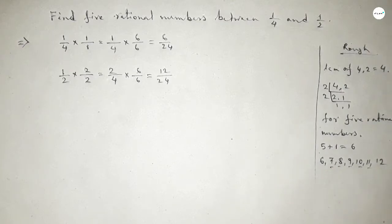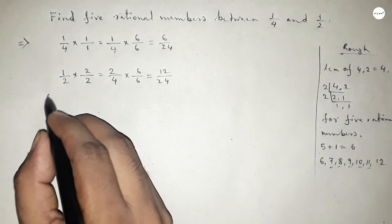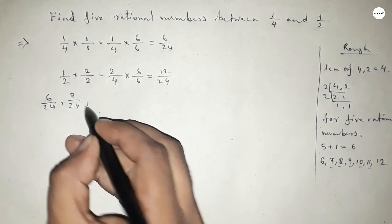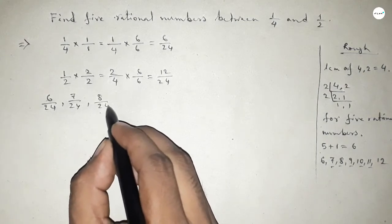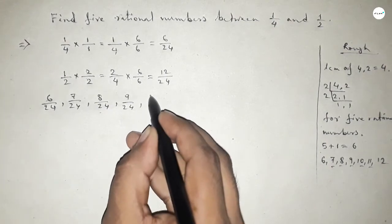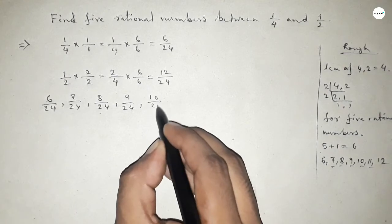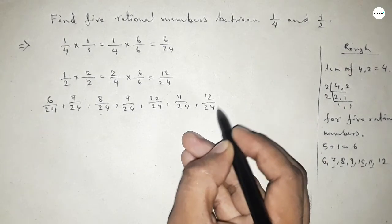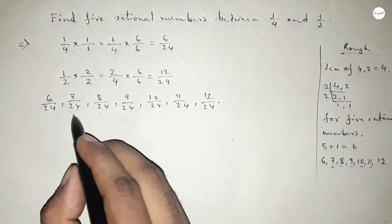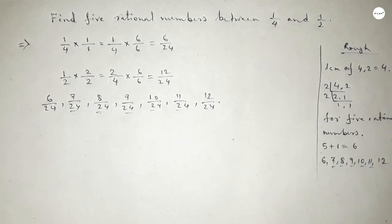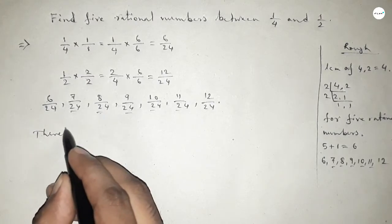Now between 6 and 12 we can find 5 natural numbers, and from these natural numbers we can form 5 rational numbers. So all the rational numbers are: 6 over 24, 7 over 24, 8 over 24, 9 over 24, 10 over 24, 11 over 24, and 12 over 24. Among these, the required 5 rational numbers are between 1 over 4 and 1 over 2.